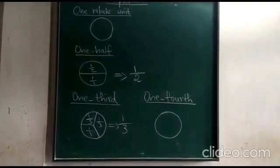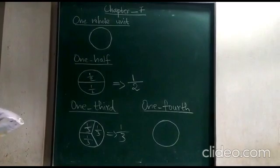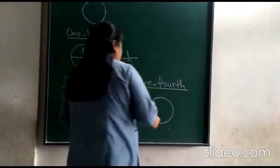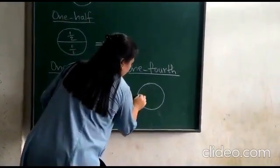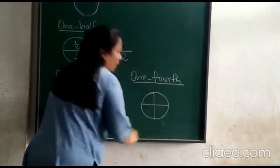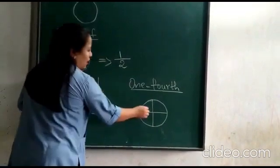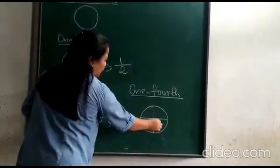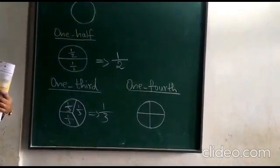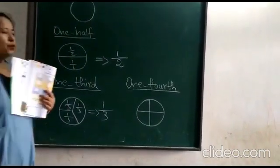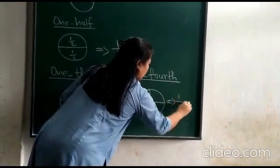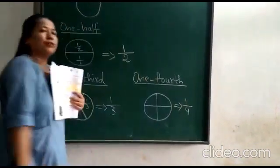Let's move to one-fourth. Again, if we divide this circle into four equal parts — one, two, three, four — each part is known as one-fourth.